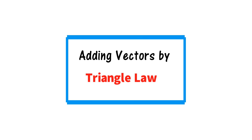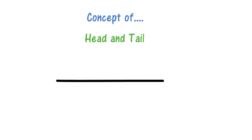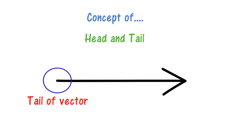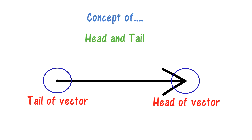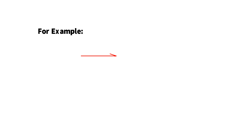Before explaining the triangle law, let me tell you the tricky concept of the head and tail rule. If I draw a vector, this part of the vector is known as the tail of the vector, and this part is known as the head of the vector.